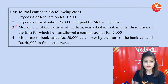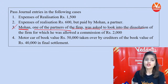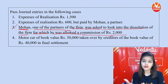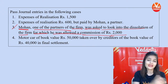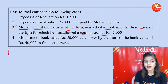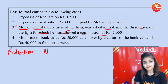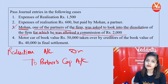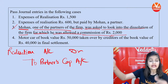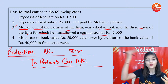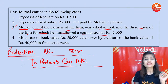Third transaction — Mohan, one of the partners, was asked to look into the dissolution of the firm, for which he was allowed a commission of ₹2000. You are giving commission to the partner — it is the firm's expense. So Realization Account is debited, and Mohan Capital Account is credited because the partner's capital increases when he receives commission. Journal entry: Realization Account Debit, To Mohan Capital Account, ₹2000.